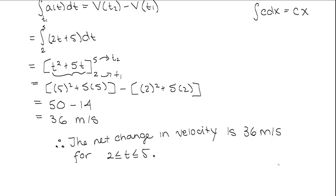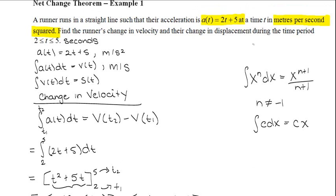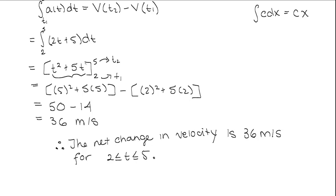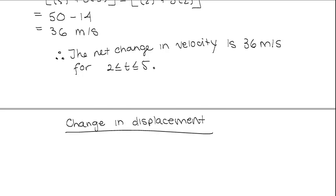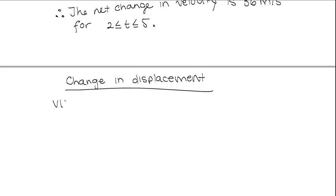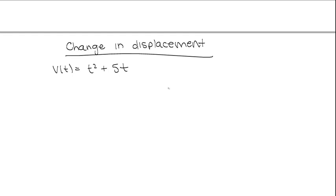Now we need to find the change in displacement. We know that the integral of velocity is going to give us position. We found that our velocity function is t squared plus 5t, so now we're finding the change in displacement. Since we know velocity is t squared plus 5t, we can integrate v to get our position.